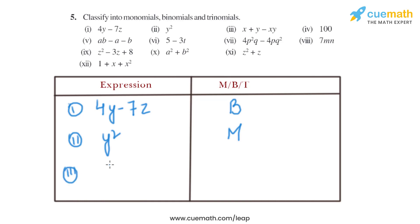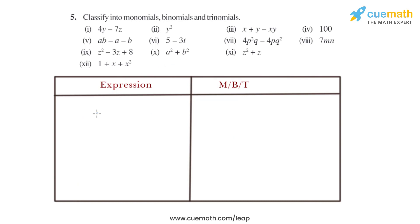The third expression is x plus y minus xy. As we can see, there are three different terms: x, y, and minus xy, so that is basically a trinomial. The fourth part has the term 100. As we can see, there is only a single term, so it is a monomial.